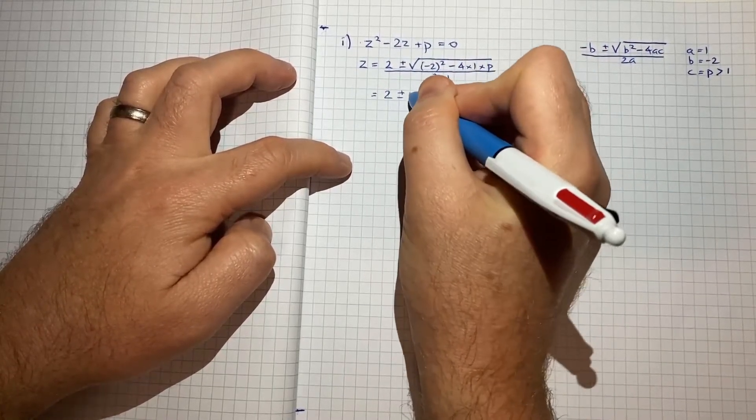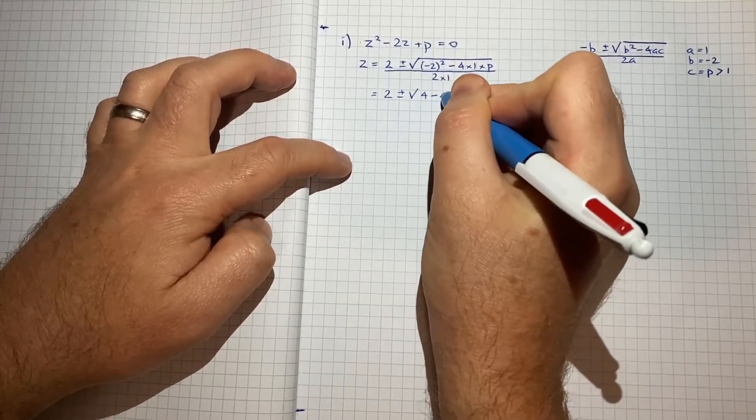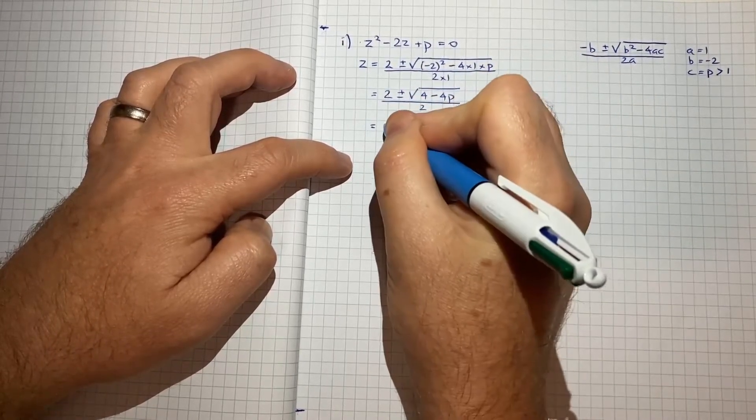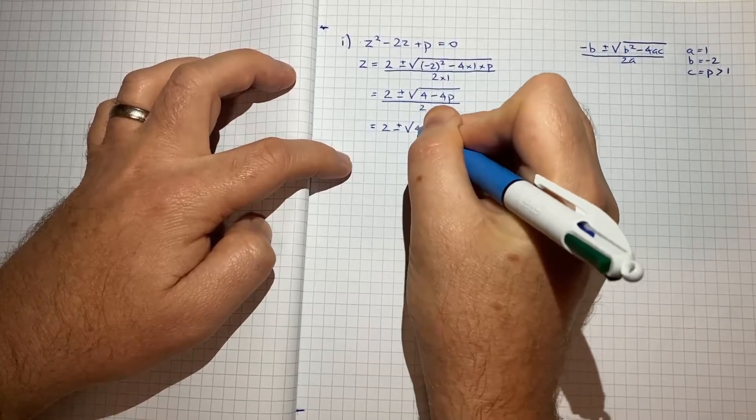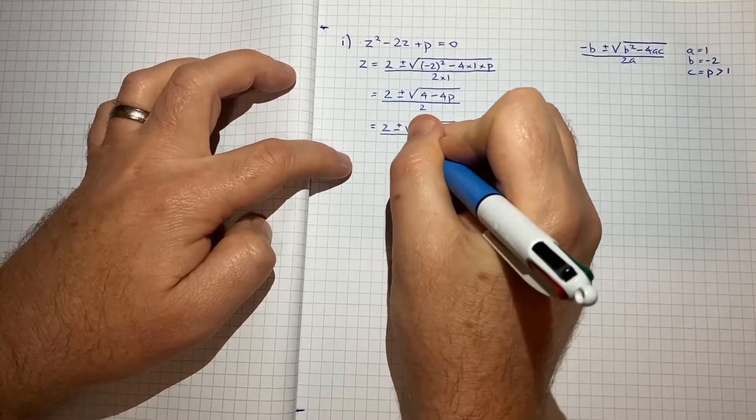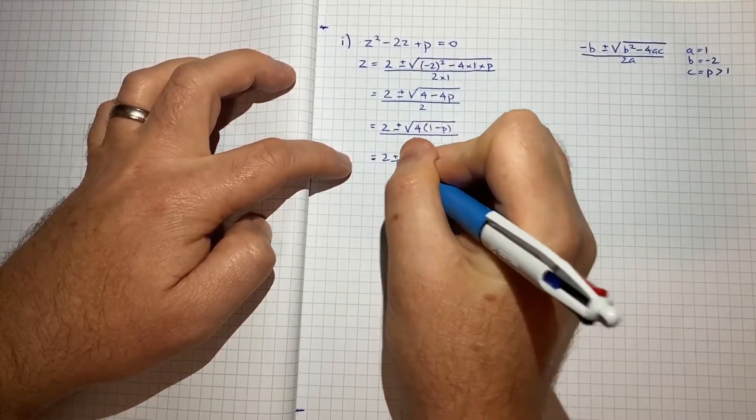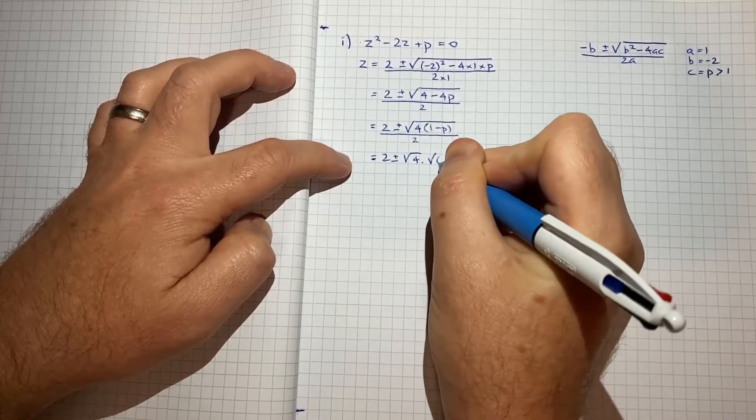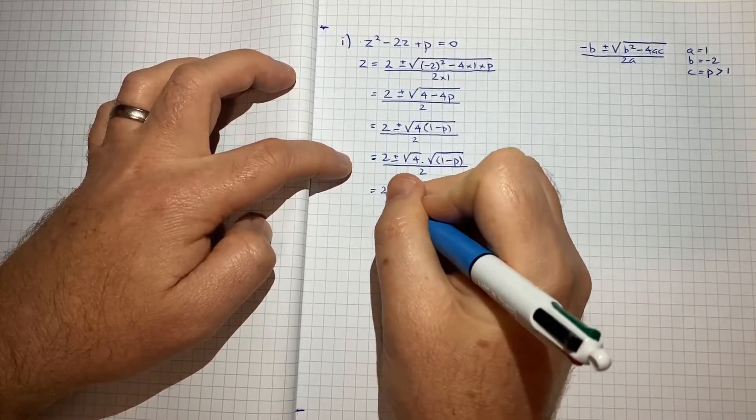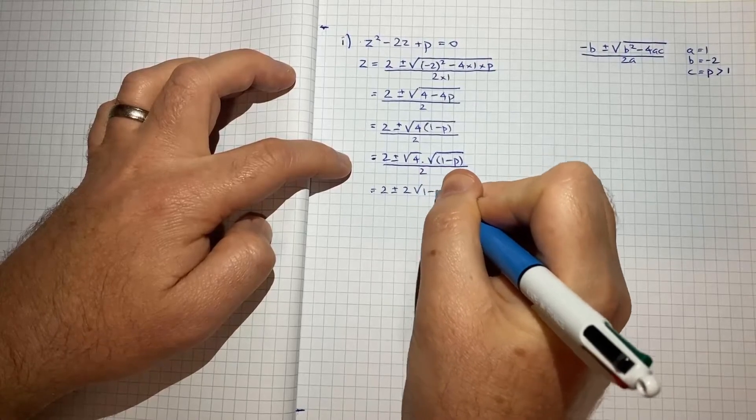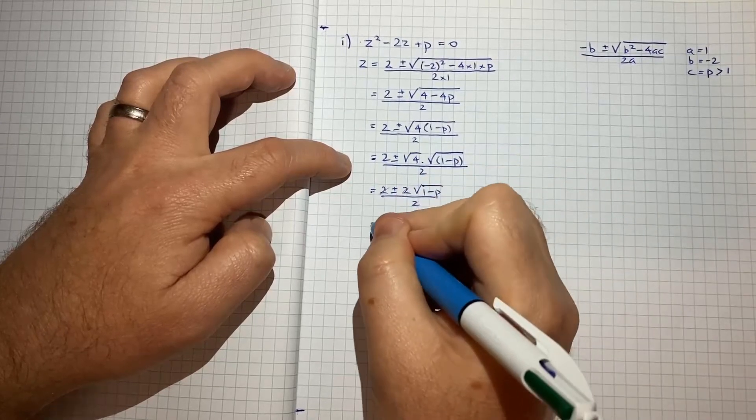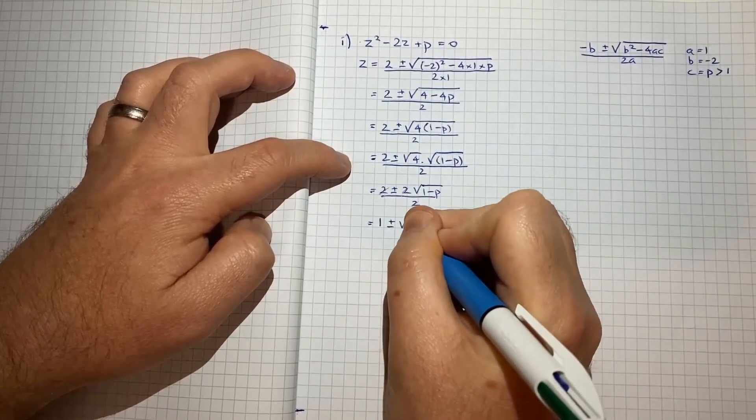We'll go 2 plus or minus the square root of 4 minus 4p on 2. That gives us 2 plus or minus the square root of 4, and I'll just factor out the 4, so we'll get 1 minus p on 2. And then I'll write that as 2 plus or minus the square root of 4 times the square root of 1 minus p on 2, which is essentially 2 plus or minus 2 root 1 minus p on 2. So we can cancel out all these 2s, and that will give us 1 plus or minus root 1 minus p.